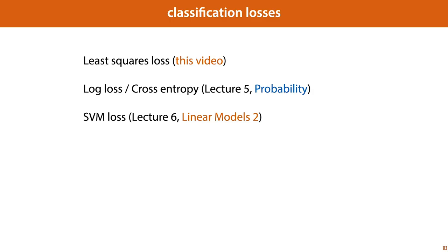For classification, we'll look at three different kinds of loss function. First, we'll look at the least squares loss in this video. This is not a very good loss function for classification, and it isn't used very often, but it helps us to explain the basic principle. And then in future lectures, we'll look at log loss, which is also known as cross-entropy loss, and at support vector machine loss.